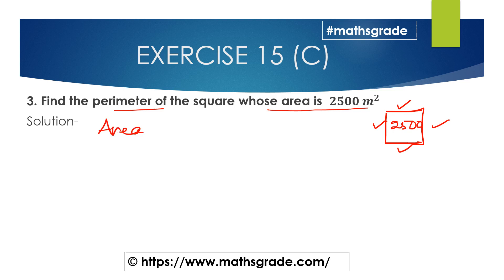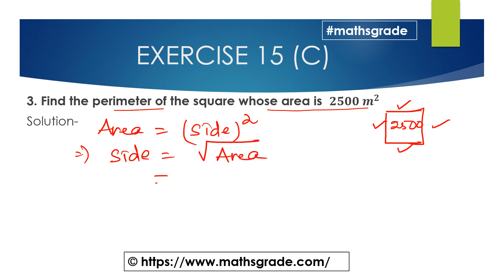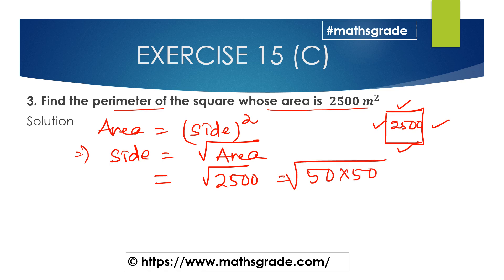We know the area of the square formula is side multiplied by side, that is side squared. So the side will be the square root of the area. Square root of 2500 — we know 50 multiplied by 50 is 2500, so the square root of 2500 is 50. Therefore, the side of the square is 50 meter.